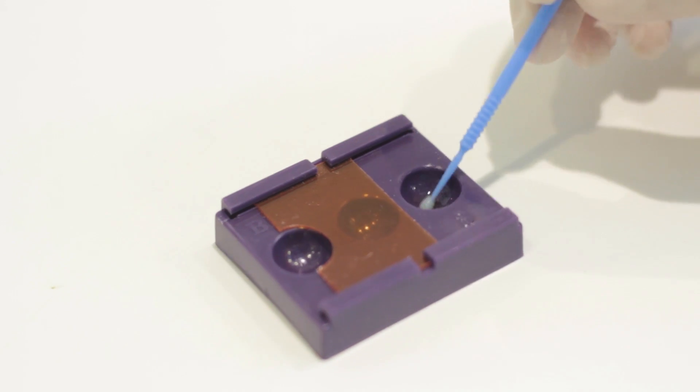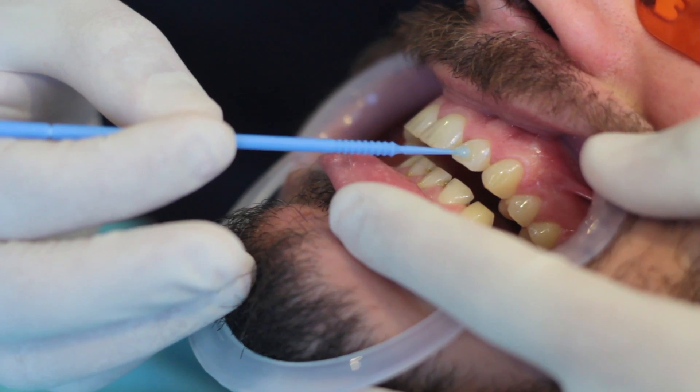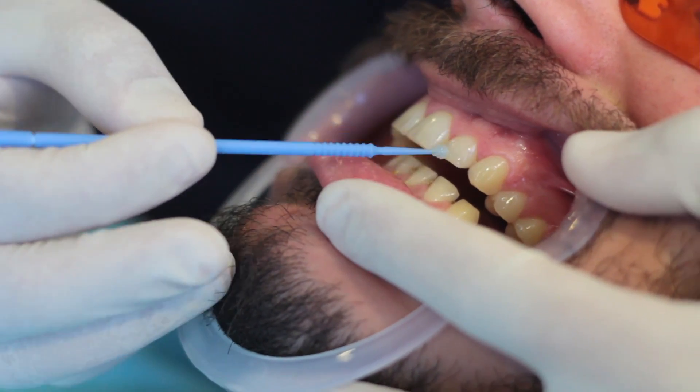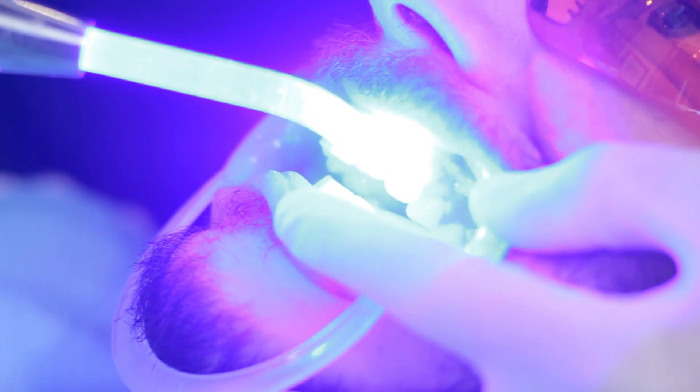We then prepare the primary adhesive material on which we will place the attachment. Apply the bonding agent to the surface, drying it gently. We then light cure the bonding agent according to the manufacturer's instructions.